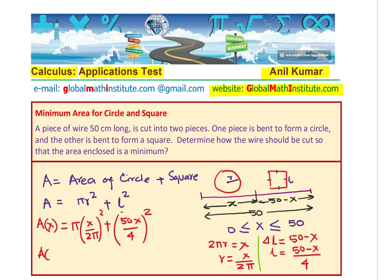We can simplify this a bit. We can write the area as x square over 4 pi plus 1 over 16 times (50 minus x) squared. So that is the expression for area. To find minimum, we'll have to differentiate this and find the critical number.